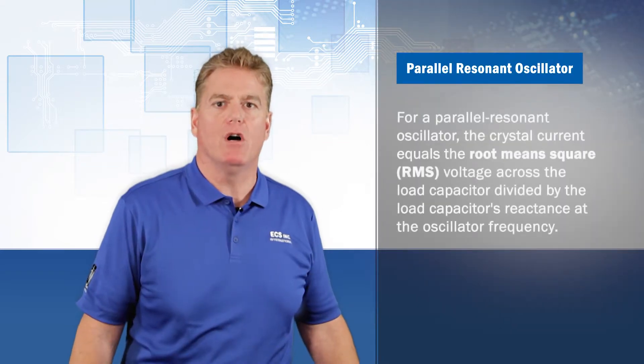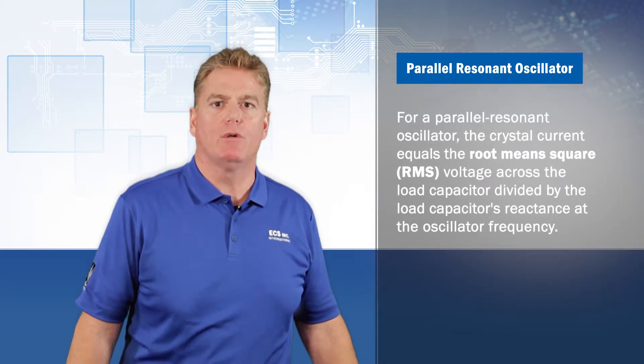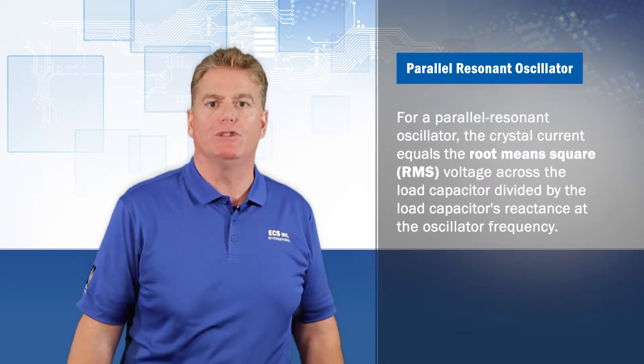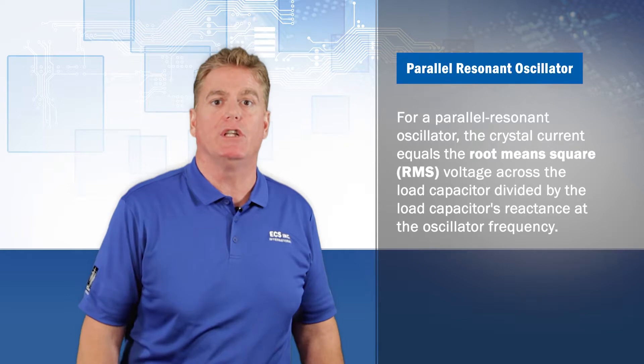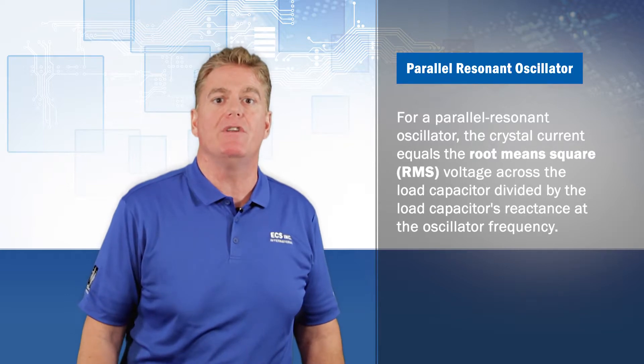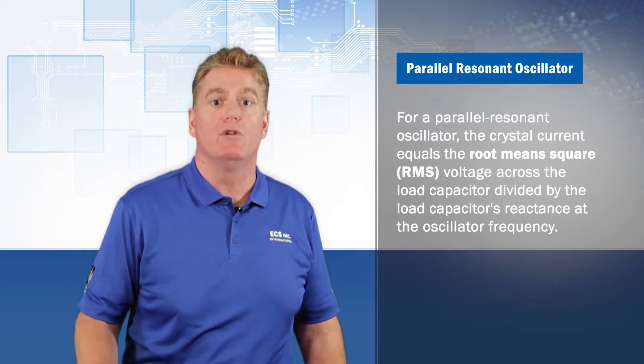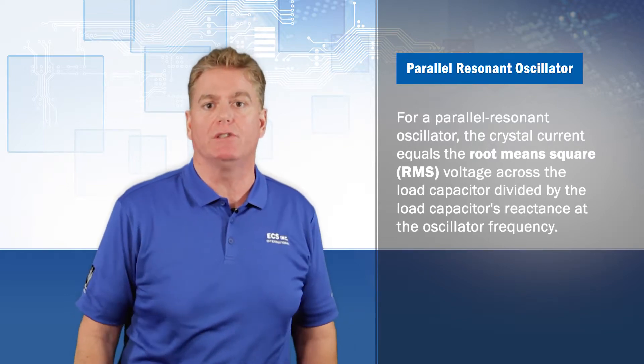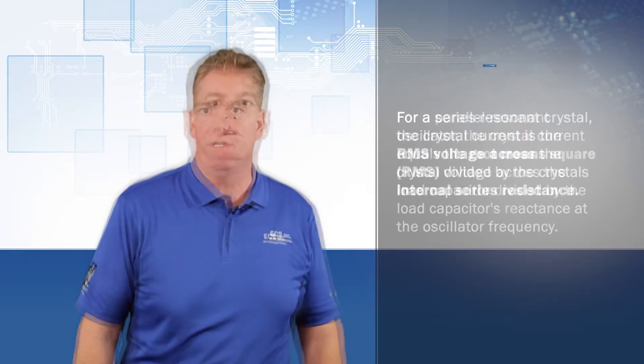For a parallel resonant oscillator, the crystal current equals the root mean square voltage across the load capacitor divided by the load capacitor's reactance at the oscillator frequency.